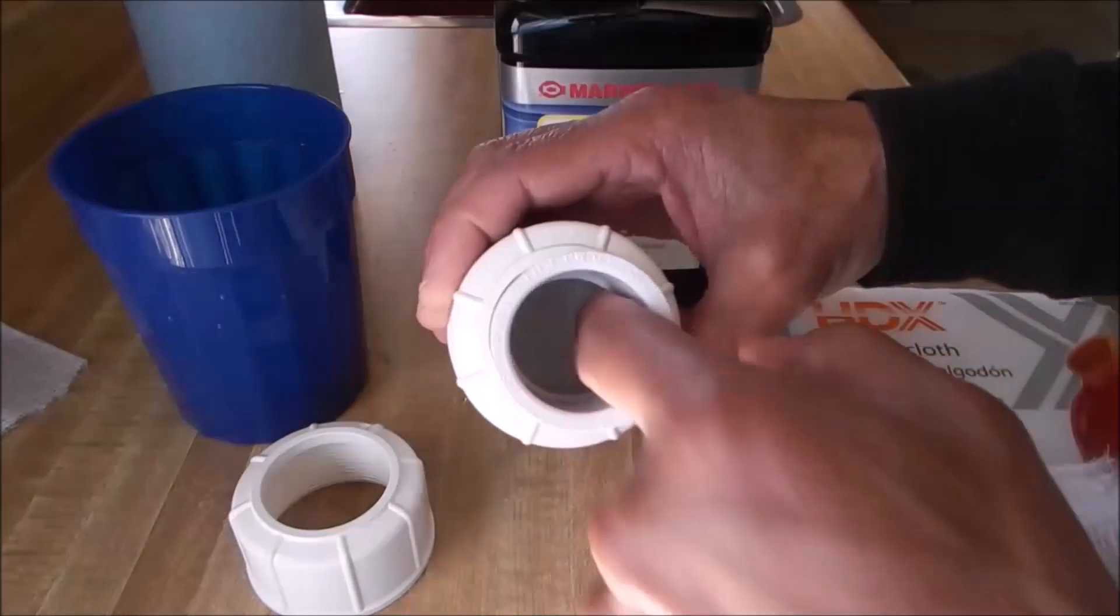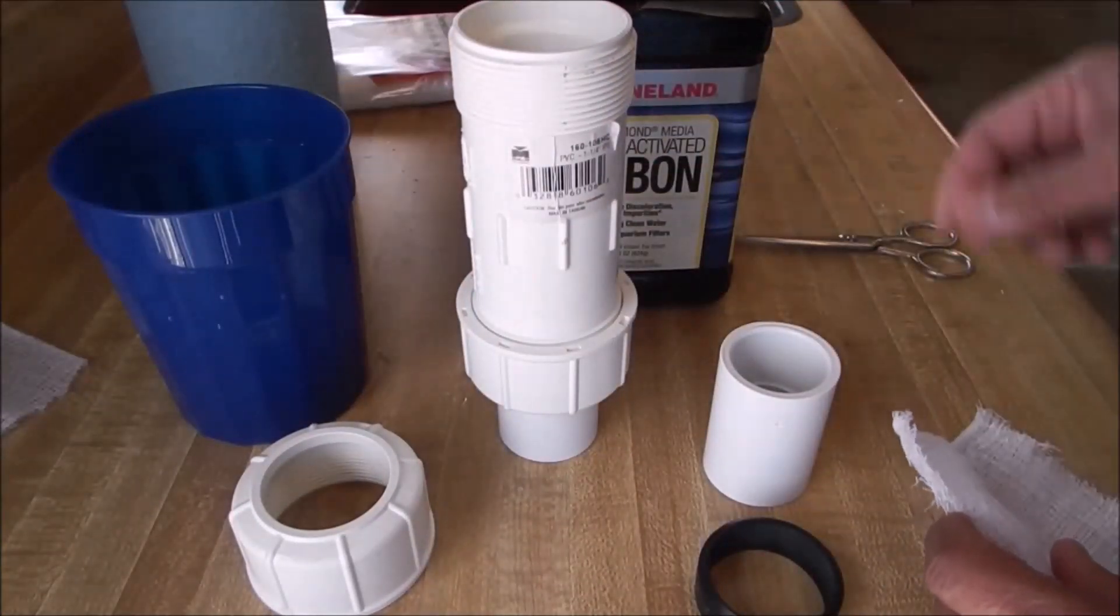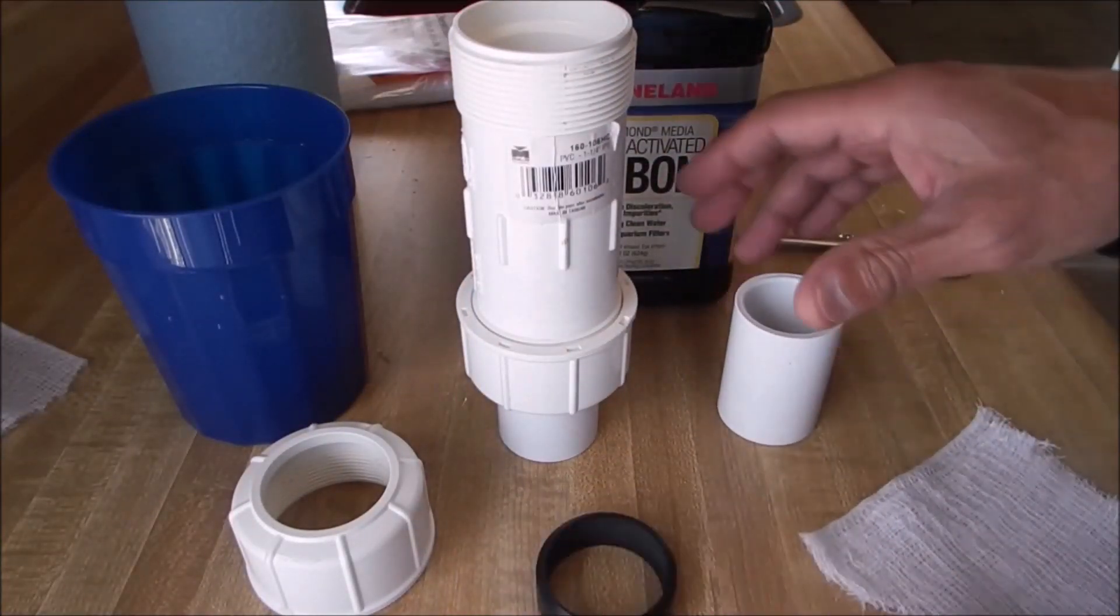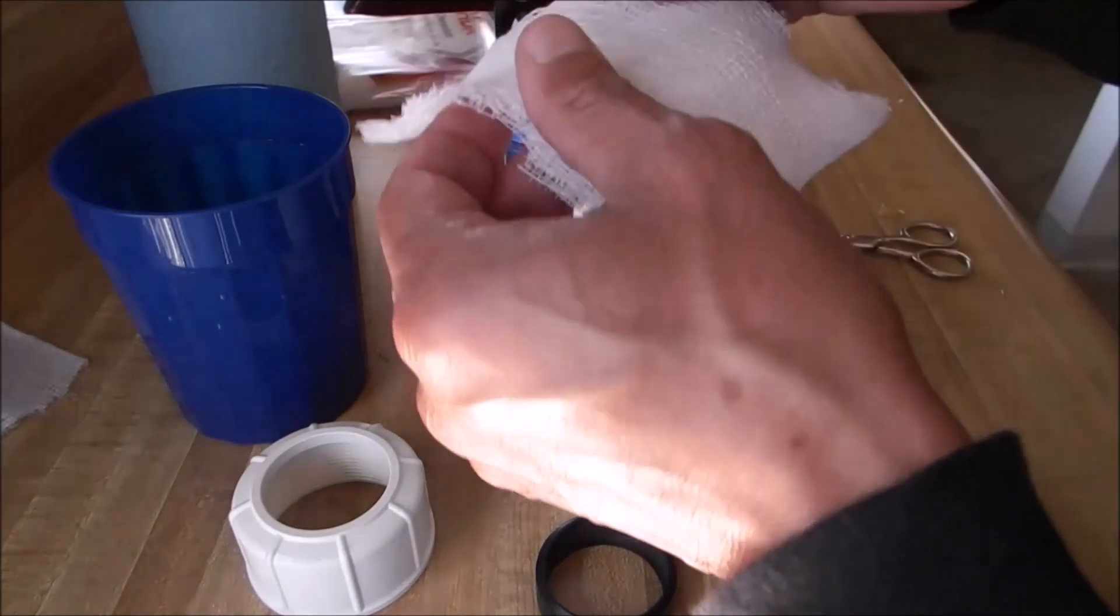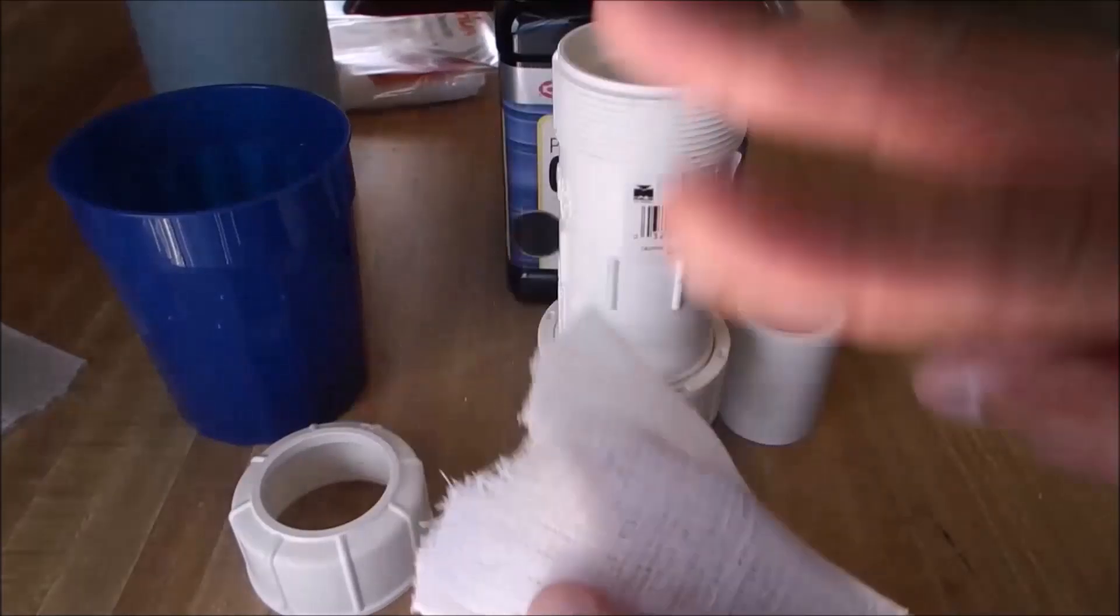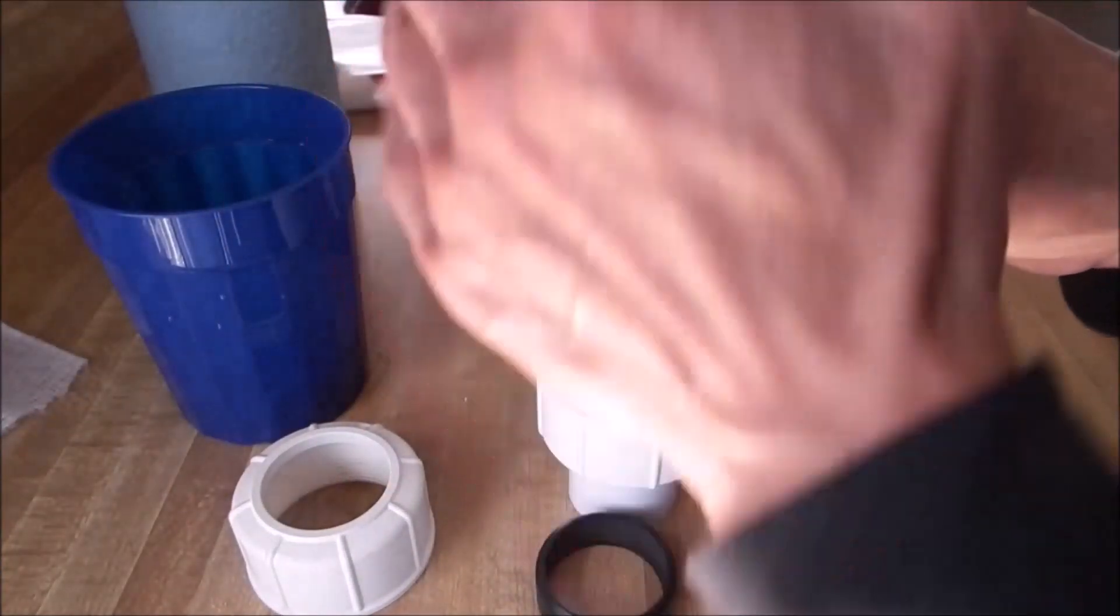I already got the cheesecloth on one side. I'll go ahead and do this one side in front of you so that you can see how it's done. It's not rocket science. Basically what you want to do is have it two layers, double of cheesecloth. Hold it like this, hold it kind of snug.